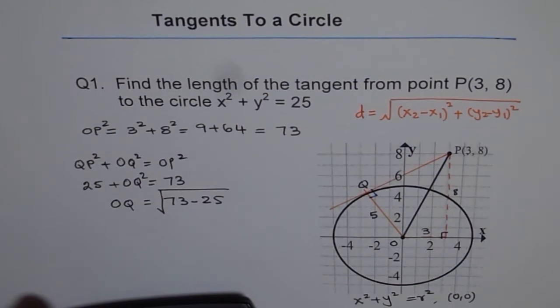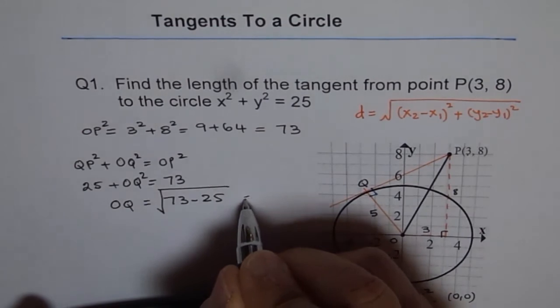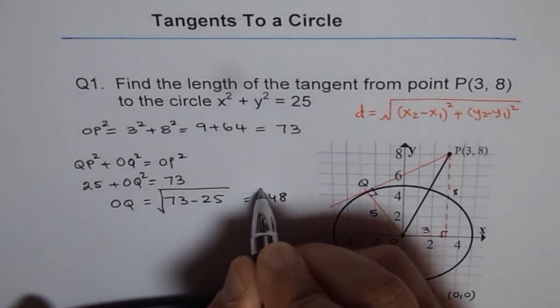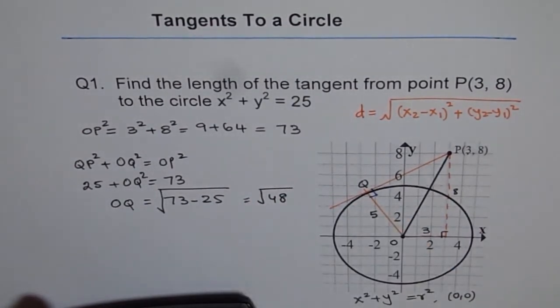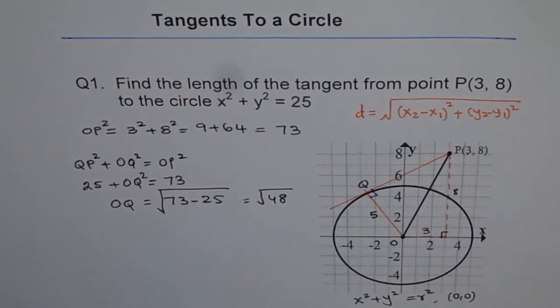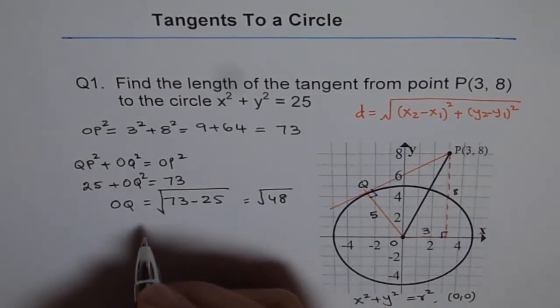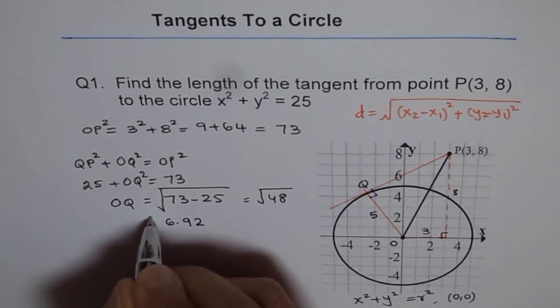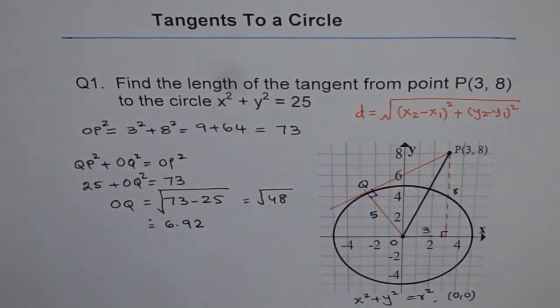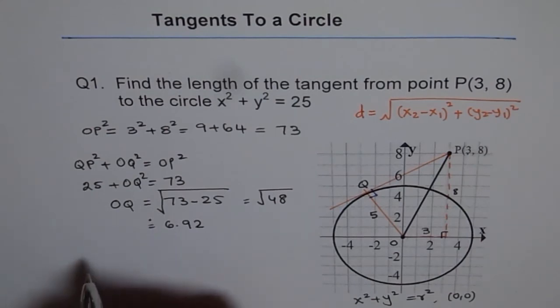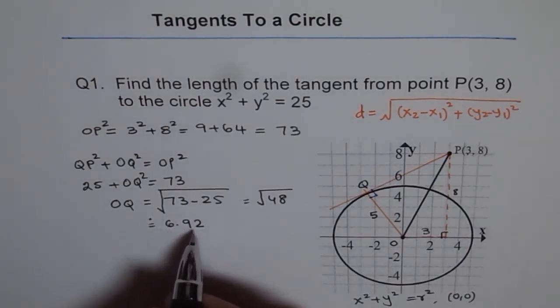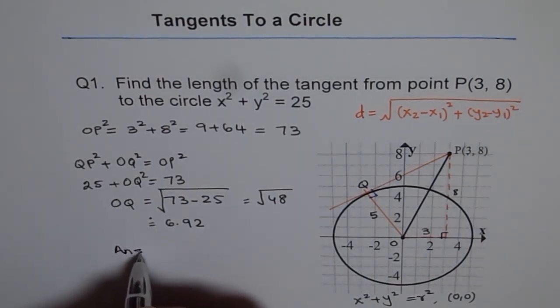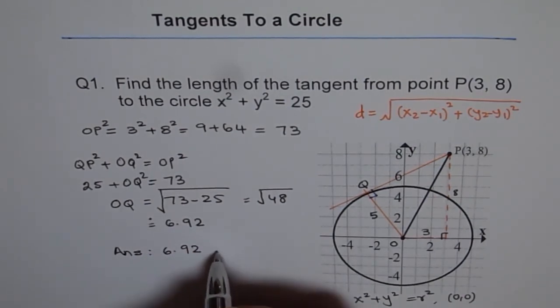So 73 minus 25 is equals to 48, which is close to 7, 7 square, which is 49. So let me write here square root of 48 for the time being, and square root of 48 is equals to 6.92. So the length of the tangent from the point P is 6.92. So our answer is 6.92 units.